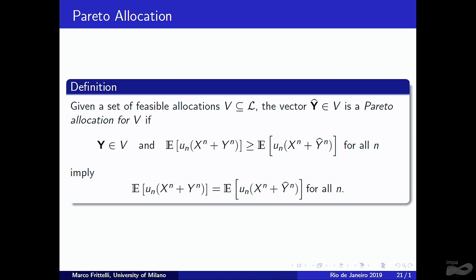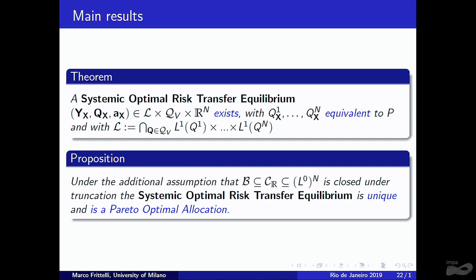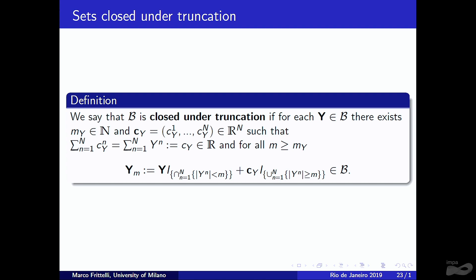A Pareto allocation is one for which no other feasible Y dominates it for all agents simultaneously. The main results are: under the stated assumptions, a SORTE exists and the optimizer is equivalent to a Pareto allocation; under one additional assumption on B, the SORTE is unique and is a Pareto optimal allocation.